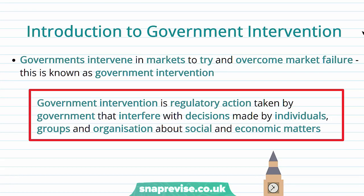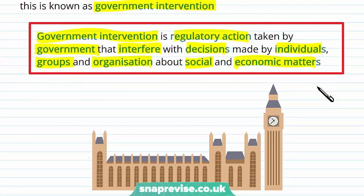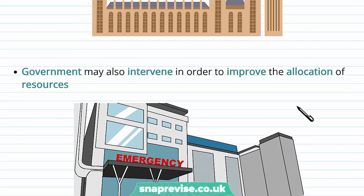So let's think about government intervention. We've talked about the role of government in previous videos, but in this video we're going to flesh it out a little bit more. Governments intervene within a market to try and overcome the market failures that we observe. Government intervention is regulatory action taken by government that interferes with decisions made by individuals, groups, and organizations about social and economic matters. The government's role is to intervene in the market where they believe to be most appropriate.